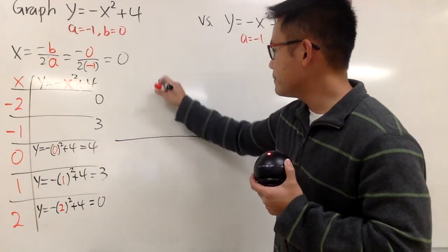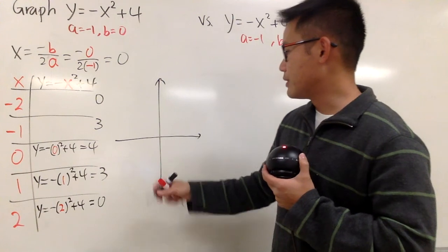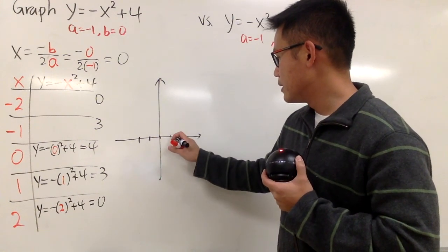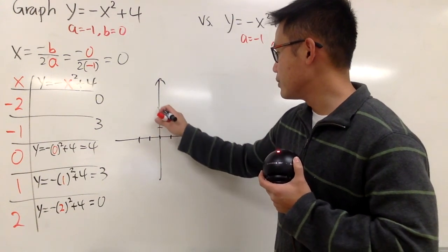And we can make a quick graph right here. So let me just put down, let's say we have the negative 1, negative 2, and 1, 2, and then 1, 2, 3, 4.